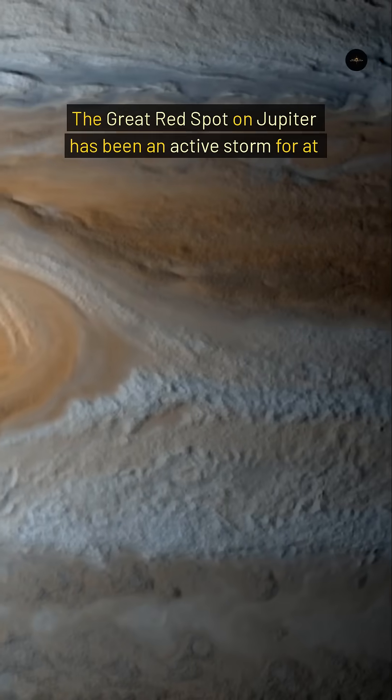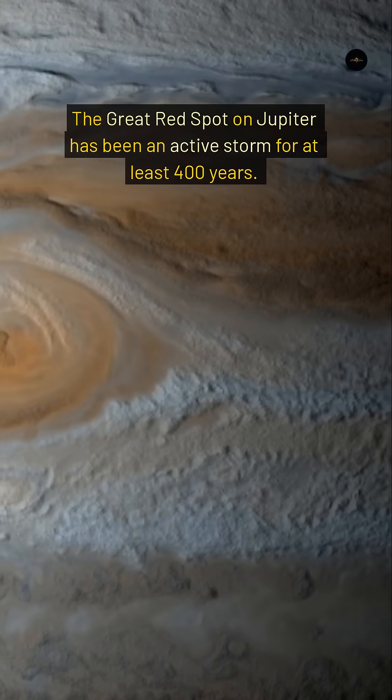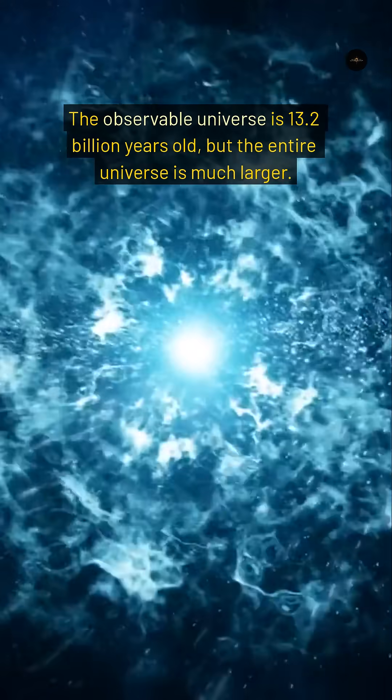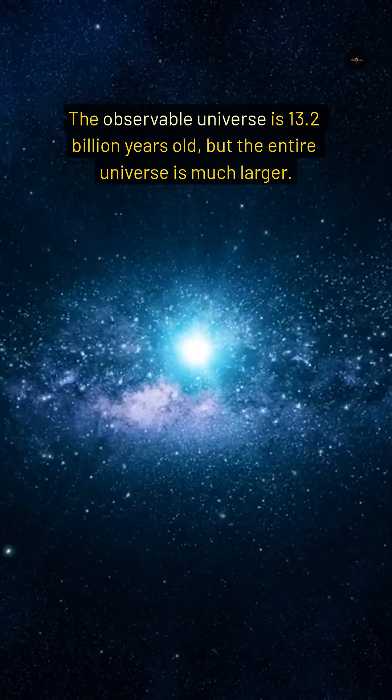The Great Red Spot on Jupiter has been an active storm for at least 400 years. The observable universe is 13.2 billion years old, but the entire universe is much larger.